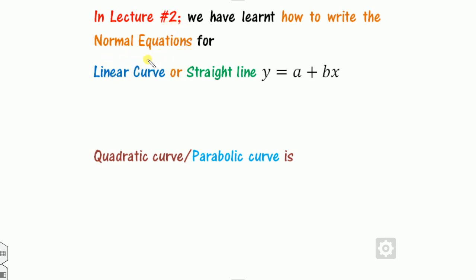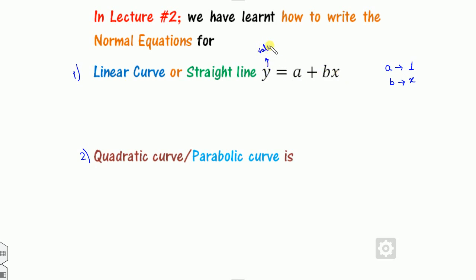In lecture two we learned how to write the normal equations for the linear curve as well as for the quadratic, cubic, and biquadratic forms. For any linear equation, also called a straight line, the coefficient of a is 1 and the coefficient of b is x, because a and b are unknown while x and y are known — x is my time value.